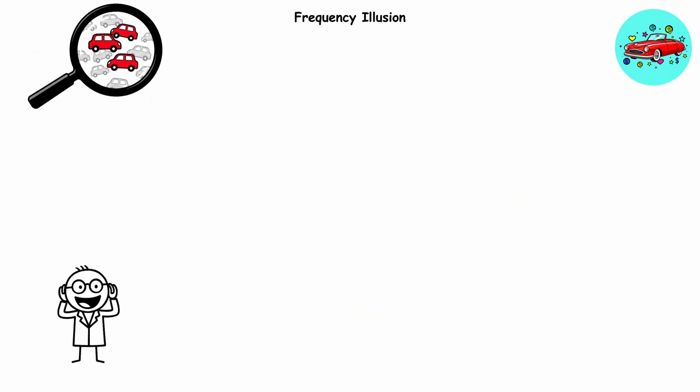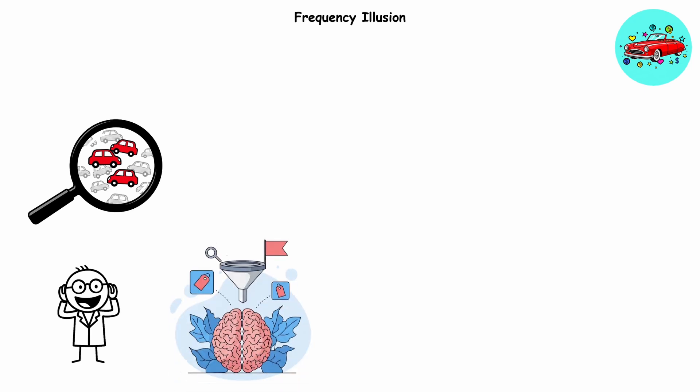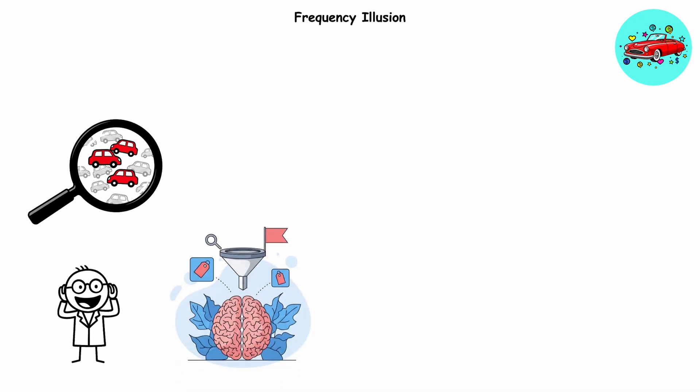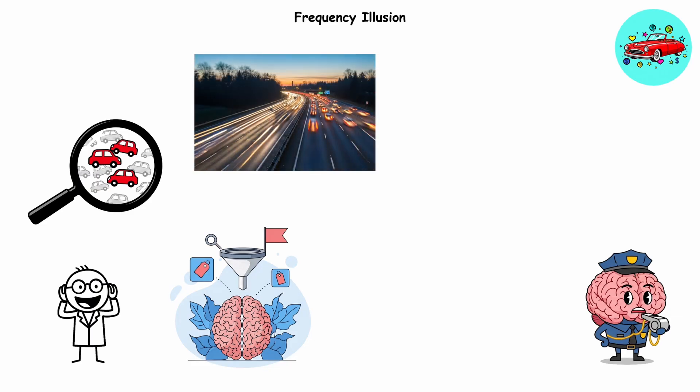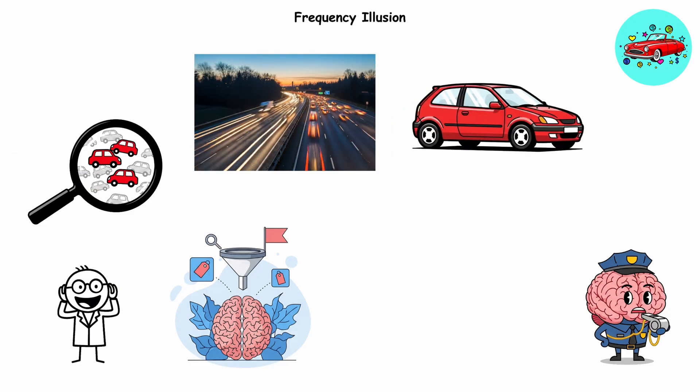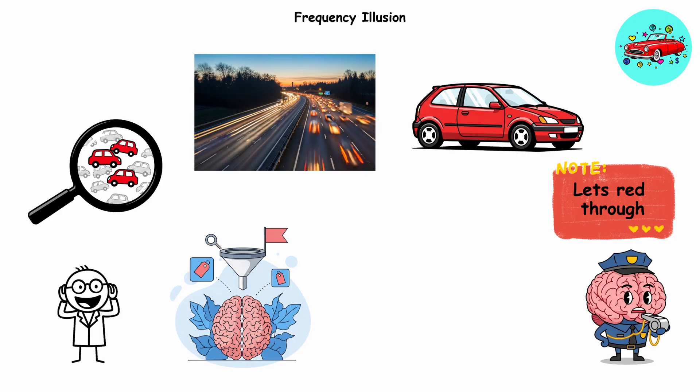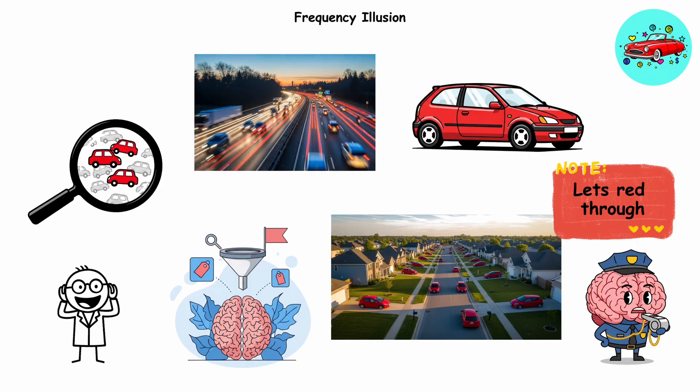In reality, those cars were always there. Your brain just wasn't flagging them. Think of it as your mental traffic cop. Normally, it ignores most of the vehicles zooming past. But once you care about red hatchbacks, the cop starts waving that one through. Suddenly, it feels like they've multiplied overnight.